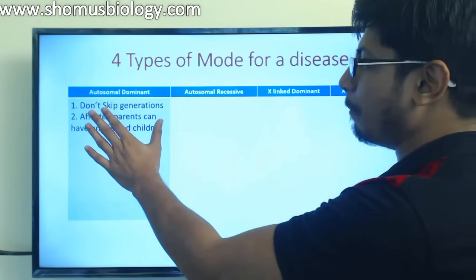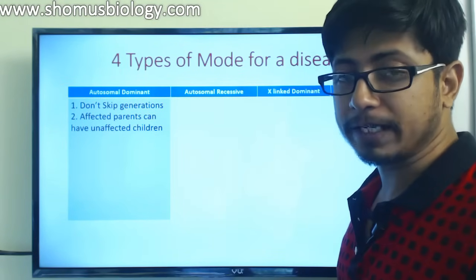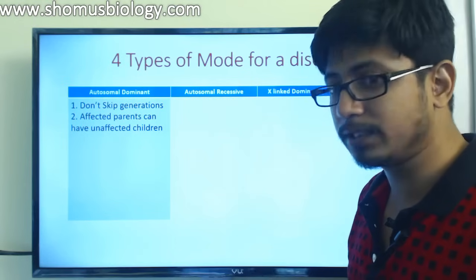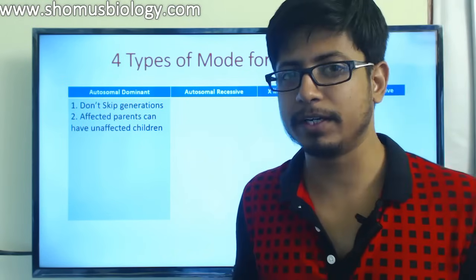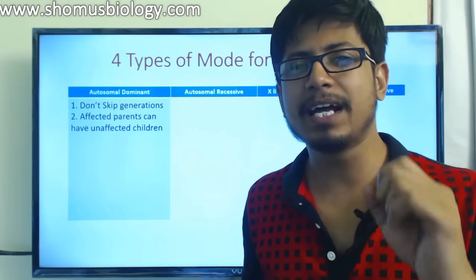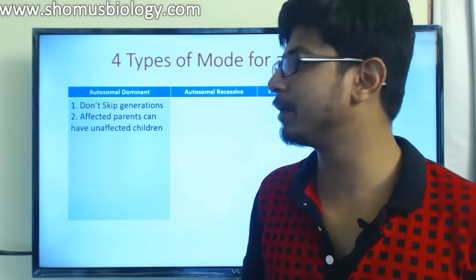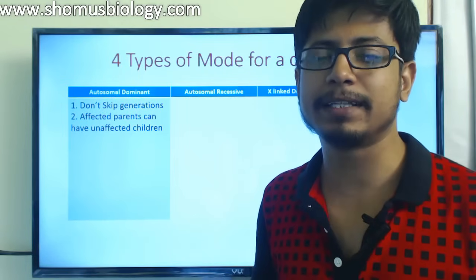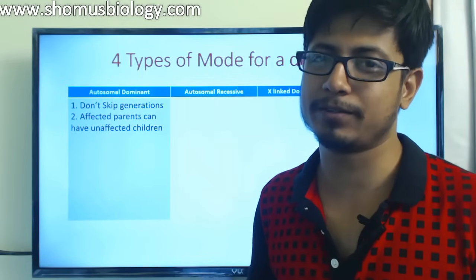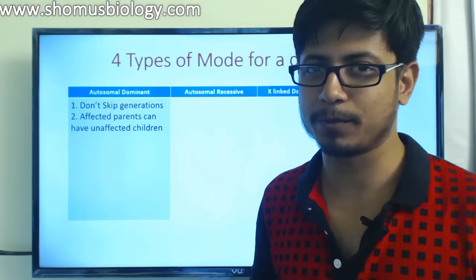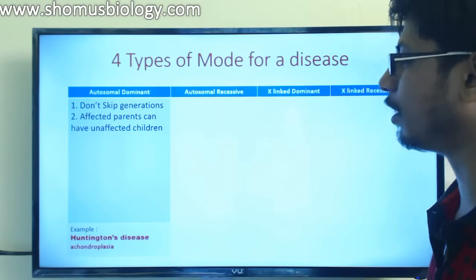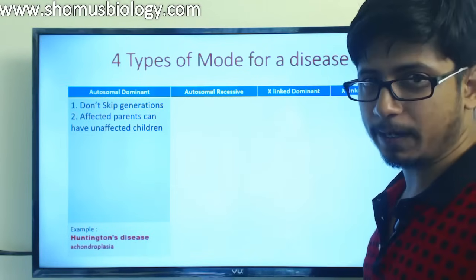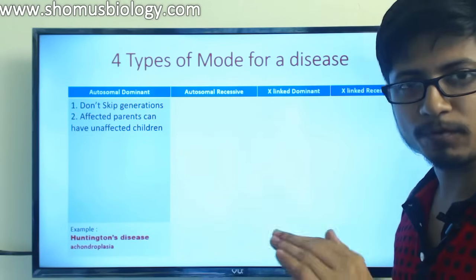The second key property is that both parents can be affected but the child can be unaffected. Think about it - father and mother both are affected but the child is unaffected. This is a highly important clue for autosomal dominant trait. Whenever you find that, you know it is very much a dominant trait carried by an autosome. Examples of autosomal dominant traits are Huntington's disease and achondroplasia - a type of dwarfism.